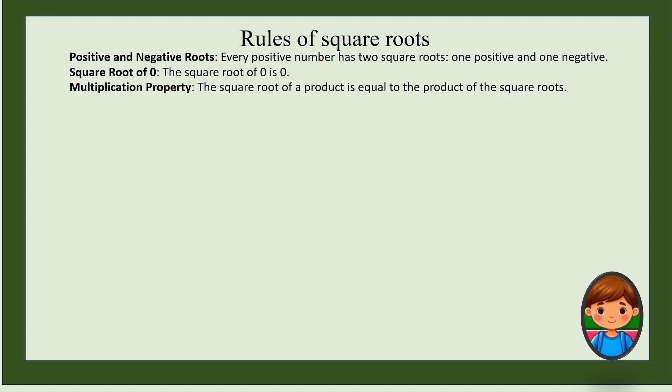Multiplication property of square roots. The square root of a product is equal to the product of the square roots. For example, square root of 9 times 4 is same as square root of 9 times square root of 4, which equals 3 times 2, which equals 6. It is same as square root of 36.